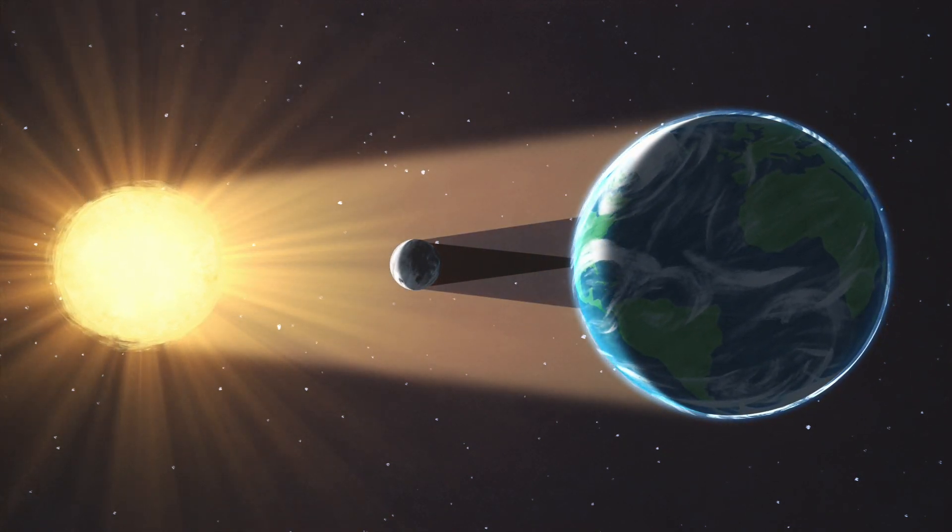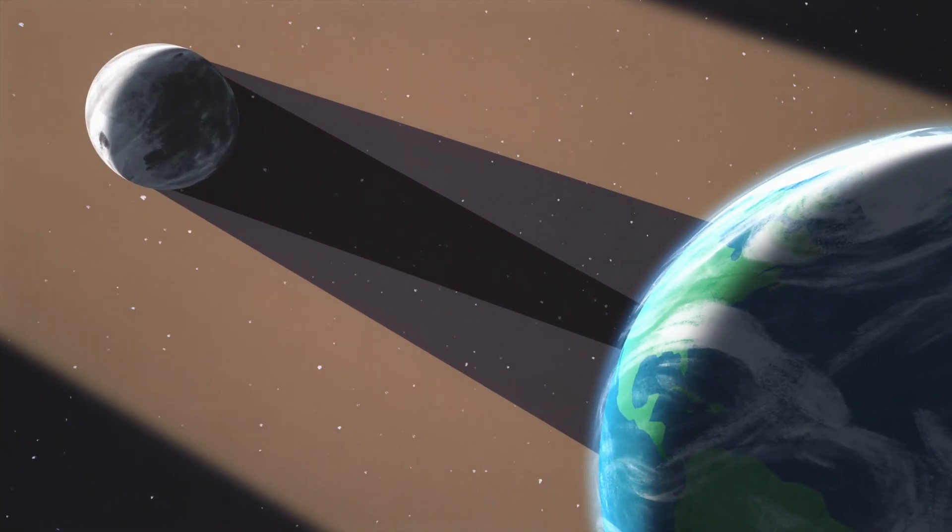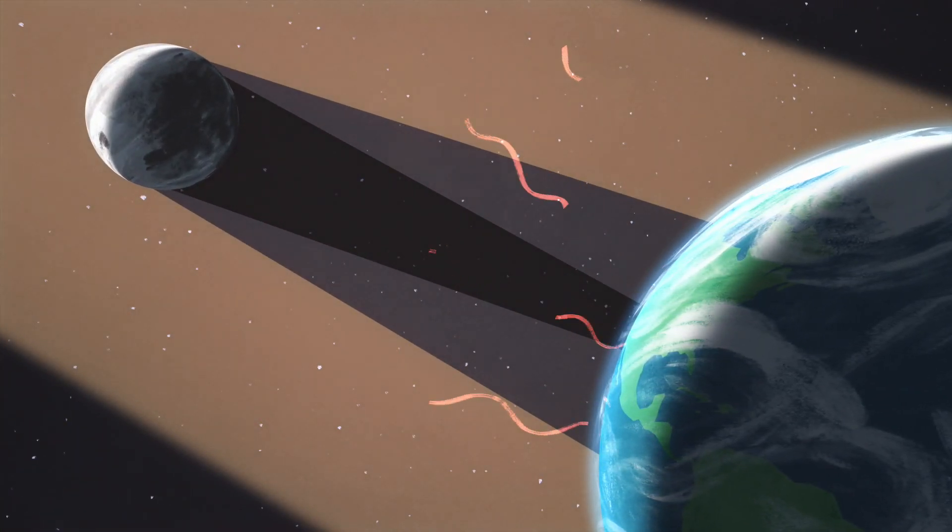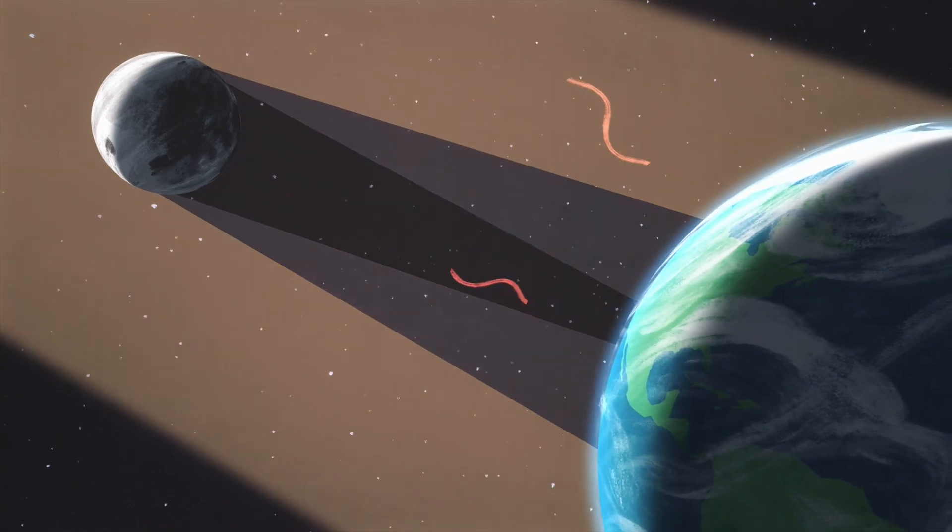Because we already know the exact shape and makeup of the moon, scientists can use the natural phenomenon to develop new calculations that could improve estimates of Earth's energy system and answer questions about Earth's climate.